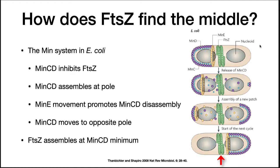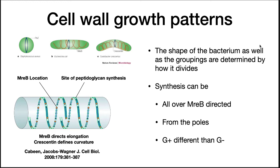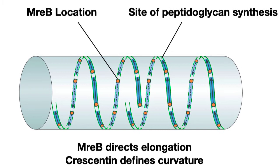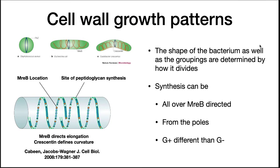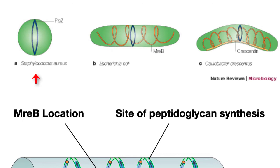It may seem like a crazy, inefficient system, but it works. The cell wall determines the shape of the bacterium, and cell wall synthesis determines where the cell wall is formed. Cell wall synthesis patterns vary depending upon species. Synthesis can be all over the cell as directed by MREB location — MREB forms either loops or a spiral, and cell wall synthesis begins at these locations. In other species, synthesis can be from the poles, or it can occur at the division sites. Gram-positive spherical cells do not contain MREB; synthesis occurs at the division site and continues until the cell has reached full size.